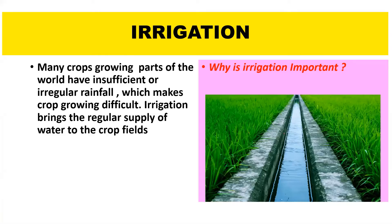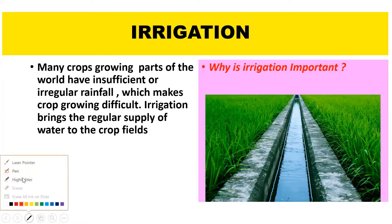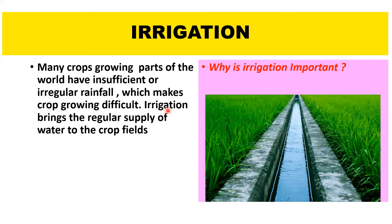Let's see how irrigation increases crop production. Many parts of the world have insufficient or irregular rainfall, which makes crop growing difficult. Irrigation brings a regular supply of water to the crop field. Irrigation helps to grow agricultural crops where the rainfall is less or in dry areas. It suppresses weed growth in grain fields and also increases production.